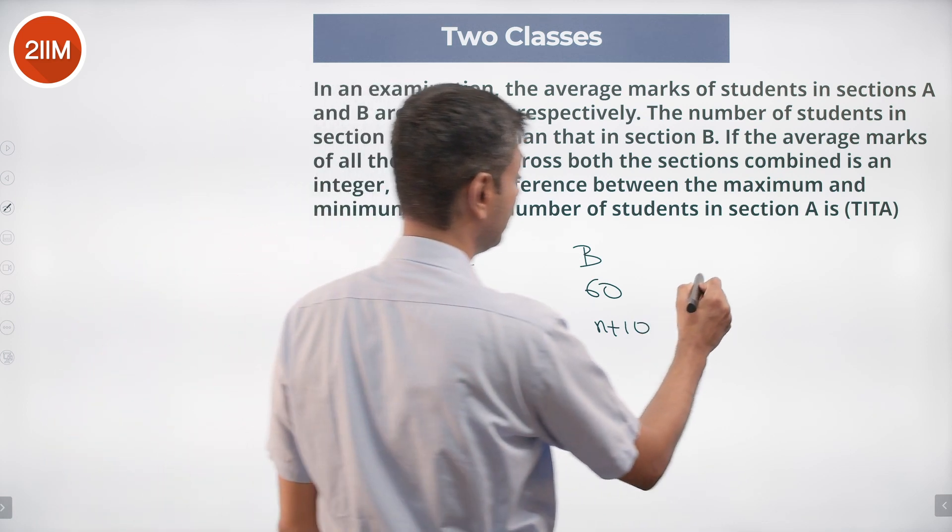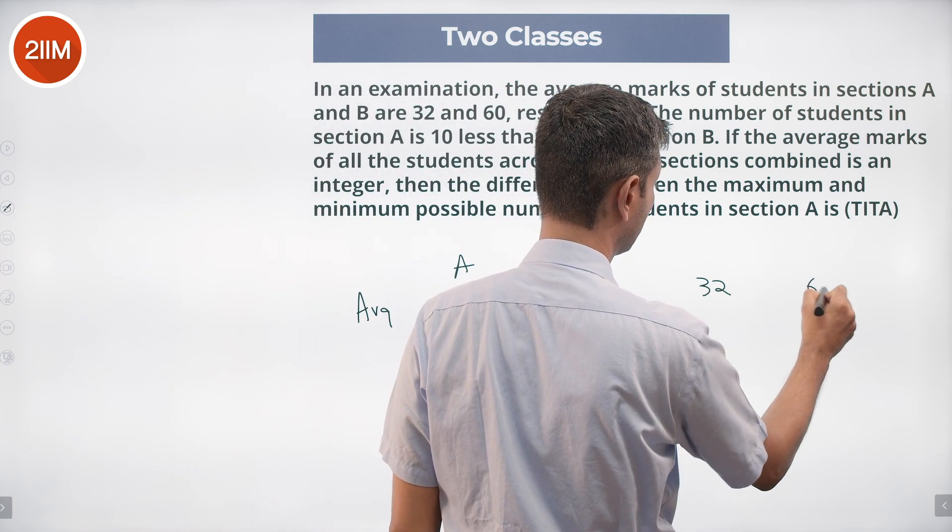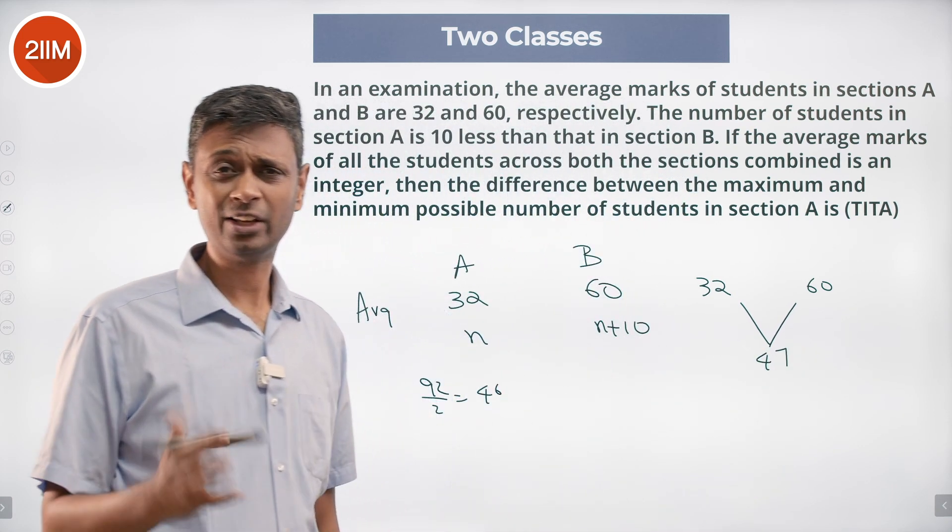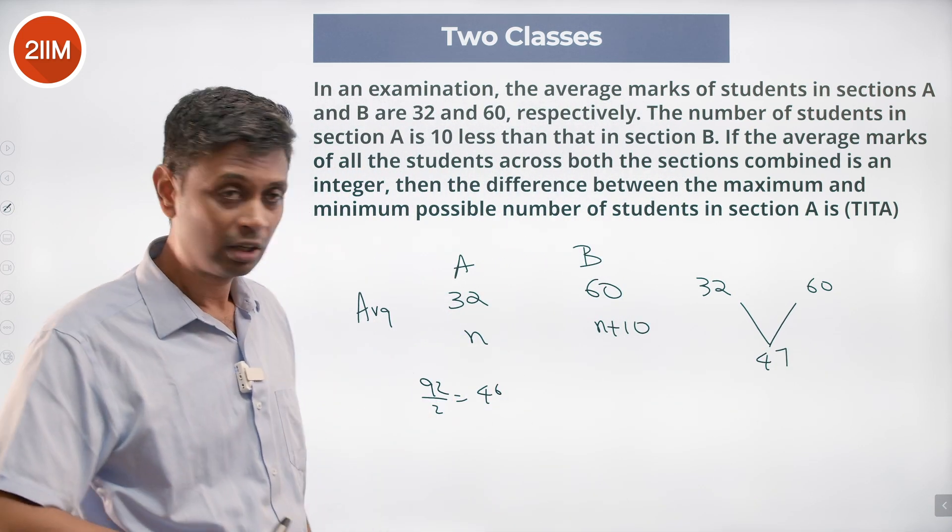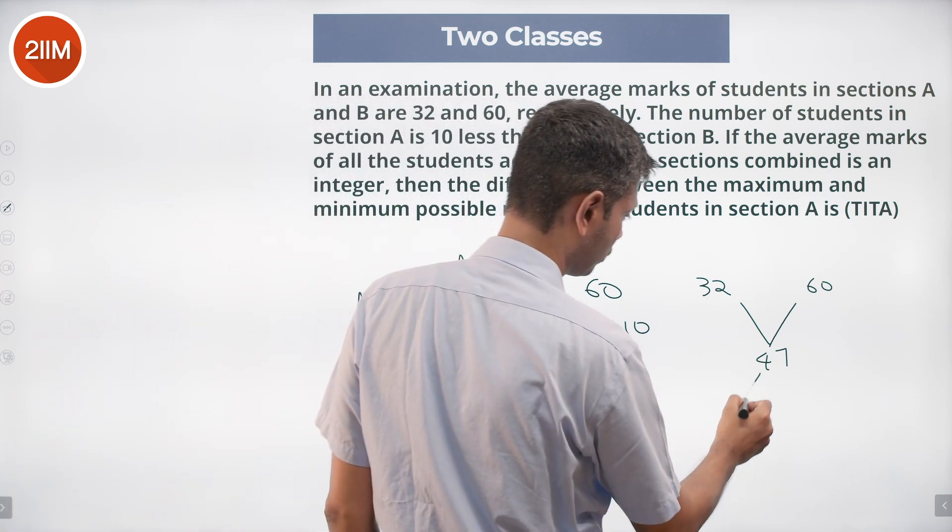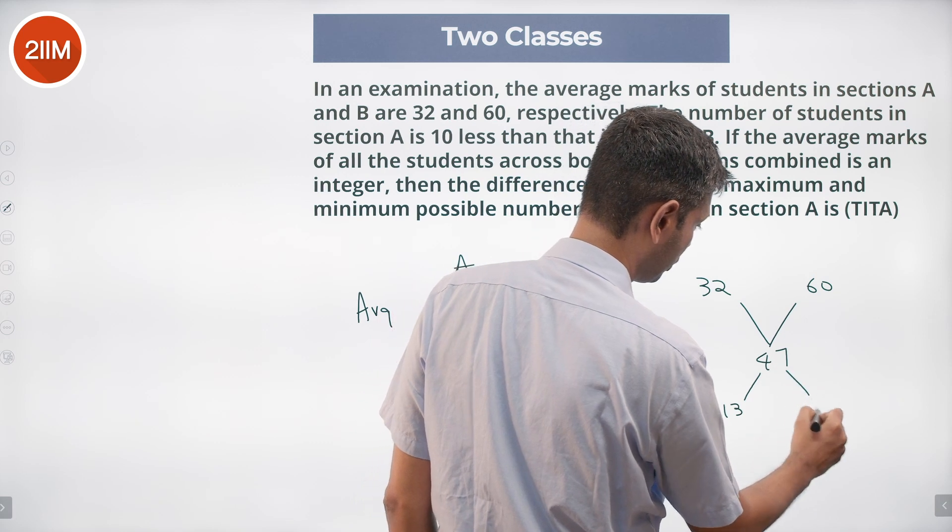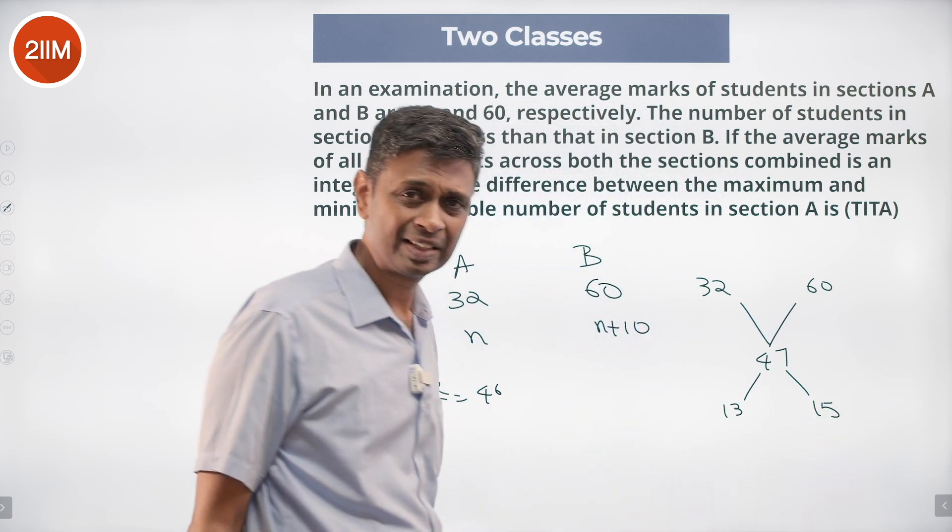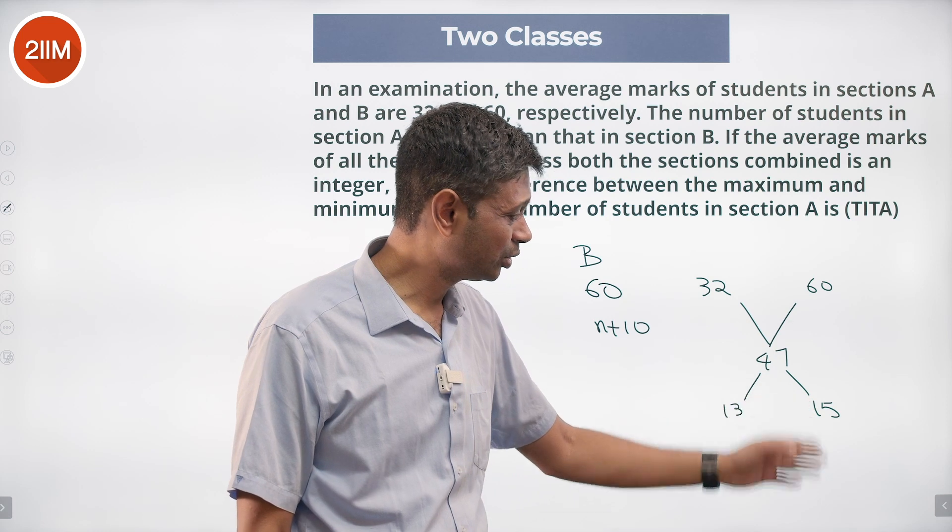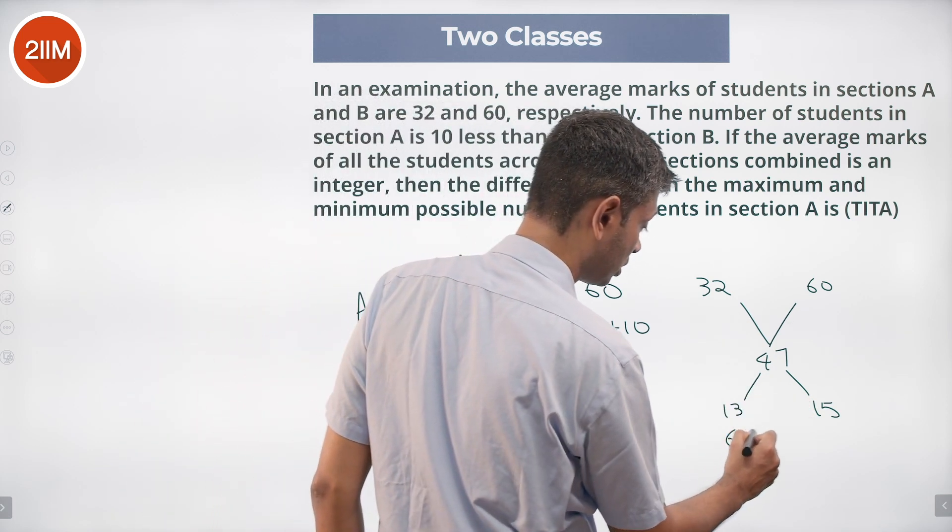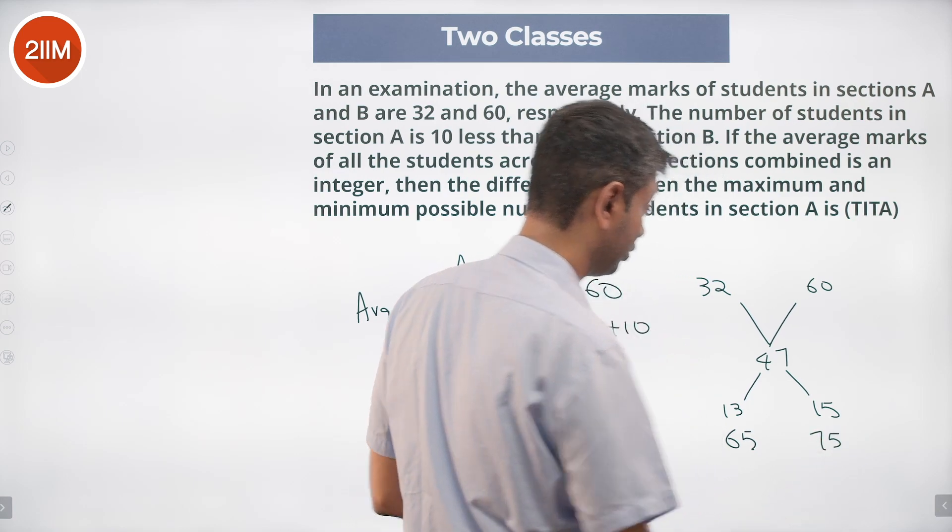So what do we do? We say hey put this as 32, put this as 60, and then say this difference is 47. Hypothetically it cannot be 46 you know, it's an integer, make it 47. So what is the ratio? This could be 13 is to 15. The difference between these two is 2x. 2x is 10, that means this could be 65 students and 75 students and so work. So it could be 47, what is heaven is possible.